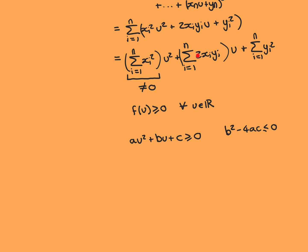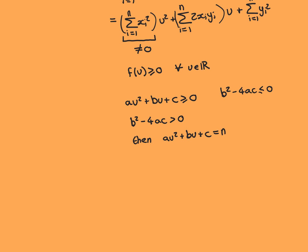We'll use that about this quadratic function here, and that will then give us the Cauchy-Schwarz inequality when we use the coefficients we've got here for our a, b, and c. I'm going to prove that you're able to conclude that the discriminant must be less than or equal to 0 by contradiction.